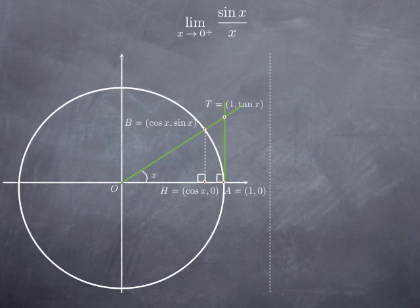Now we're going to calculate various areas, starting with triangle O, B, A. The area of a triangle is one half base times height. Here, a base for that triangle is OA, which is a radius of the unit circle and therefore has length one.